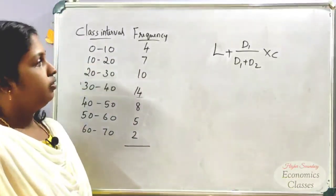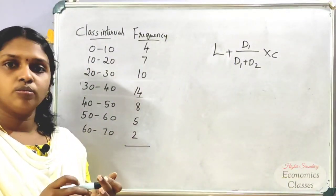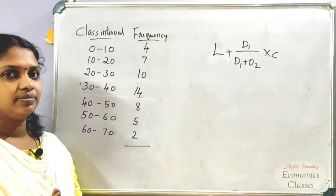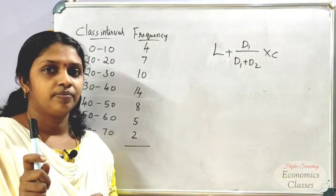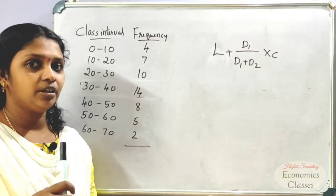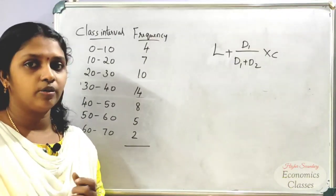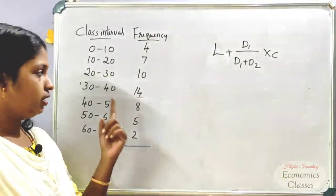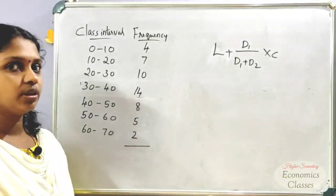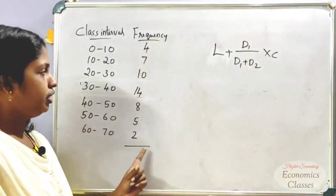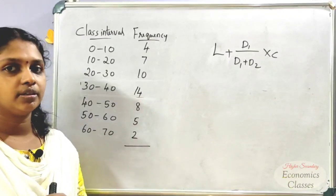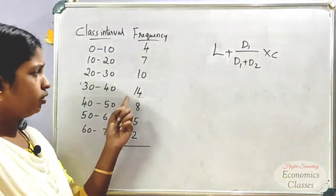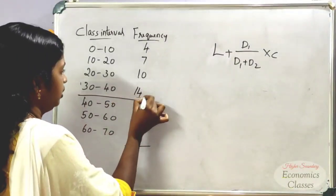We identify D1 and D2 and select the modal class. The modal class is selected as the class with the highest frequency, which is 14.